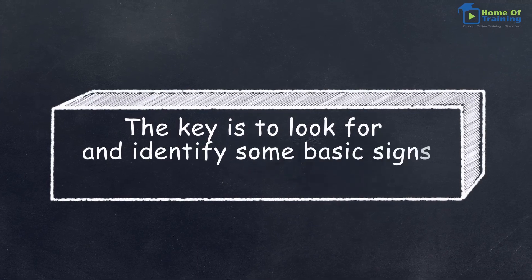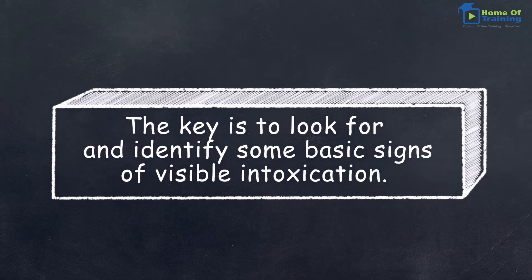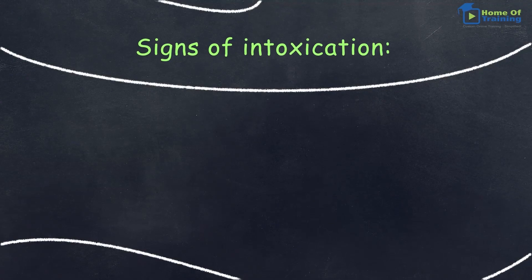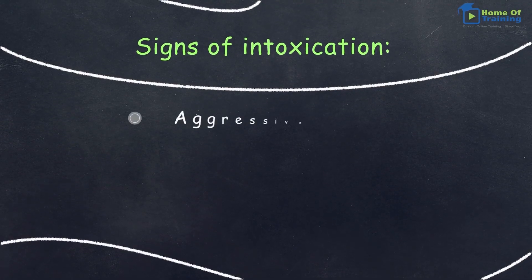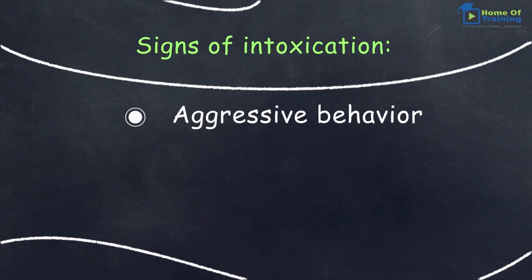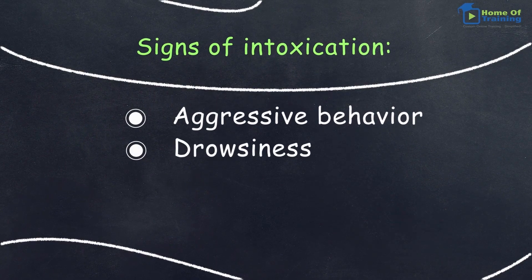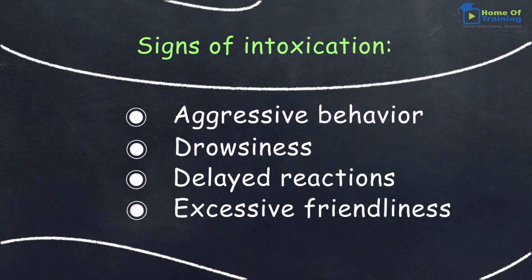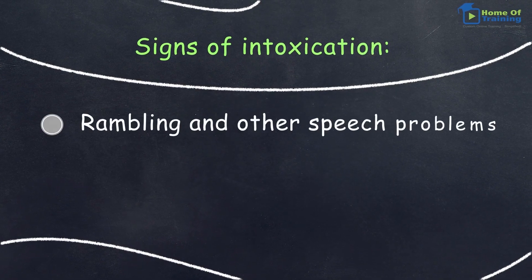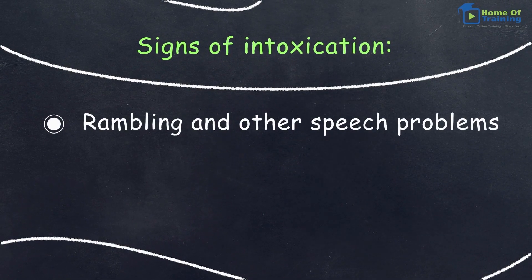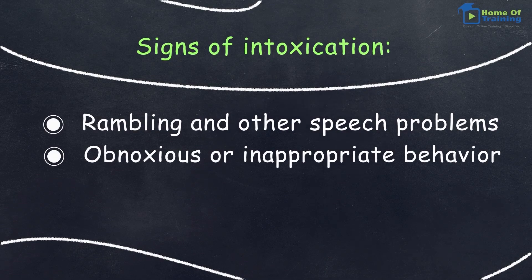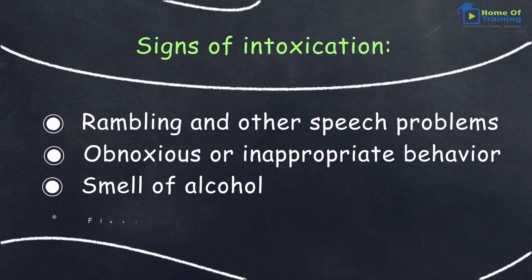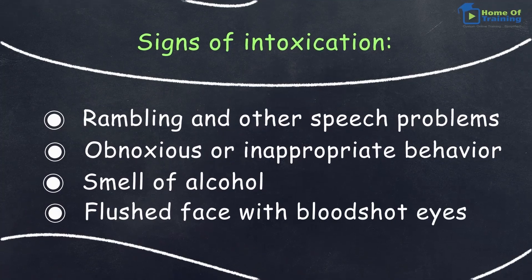The key is to look for and identify some basic signs of visible intoxication. Signs of intoxication include aggressive behavior, drowsiness, delayed reactions, excessive friendliness, rambling and other speech problems, obnoxious or inappropriate behavior, smell of alcohol, and flushed face with bloodshot eyes.